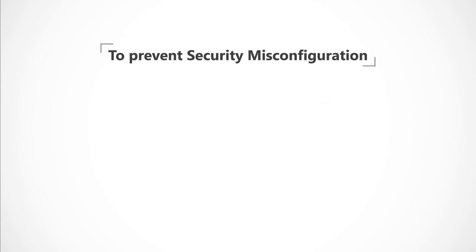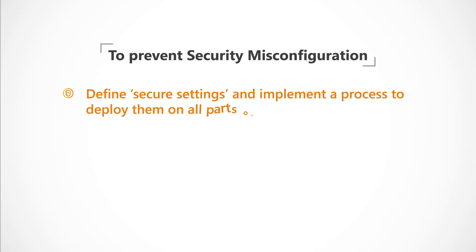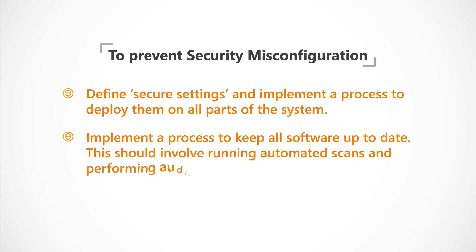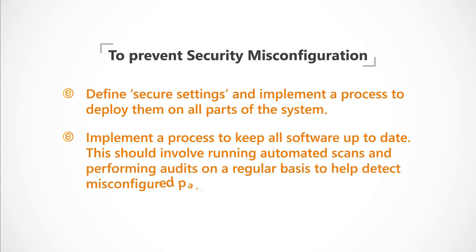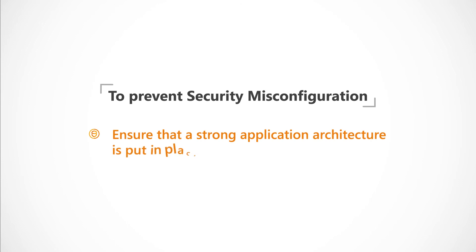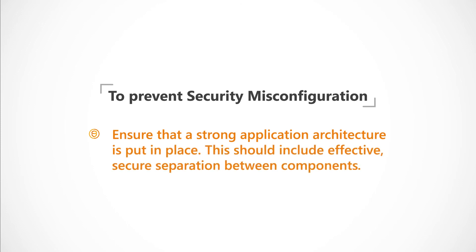Developers should take the right measures to prevent security misconfiguration vulnerabilities in their applications. Define secure settings and implement a process to deploy them on all parts of the system. Implement a process to keep all software up to date. This should involve running automated scans and performing audits on a regular basis to help detect misconfigured parts of the system. Finally, ensure that a strong application architecture is put in place, including effective secure separation between components.